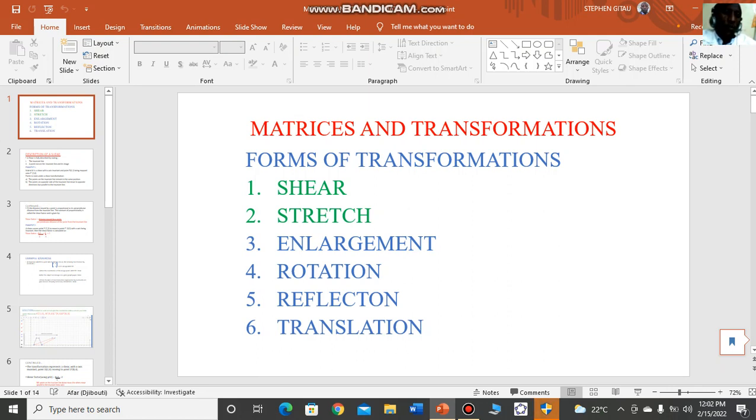The first two, shear and stretch, are new in the topic of matrices and transformations. These are taught in form four. The other four—enlargement, rotation, reflection, and translation—we met them in our form two work. However, in this topic of matrices and transformations, we see how every transformation has an attached matrix and how an object is transformed by that matrix.